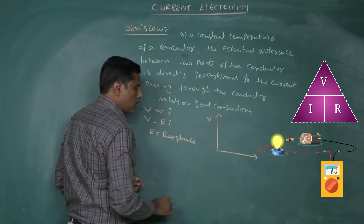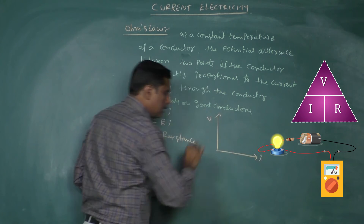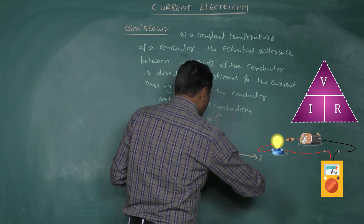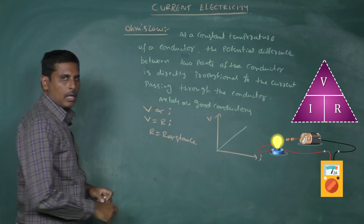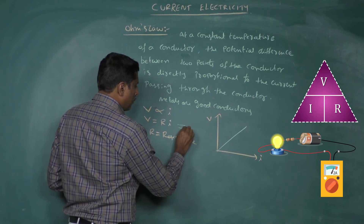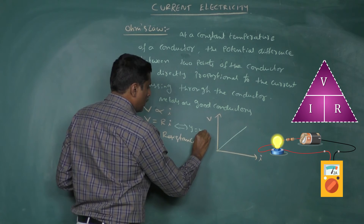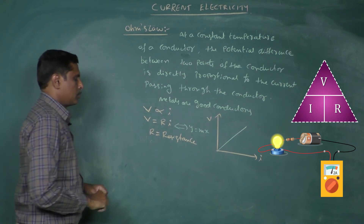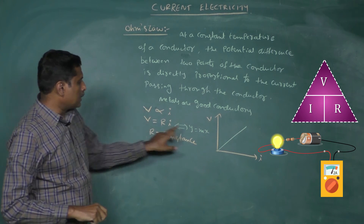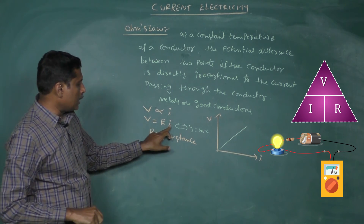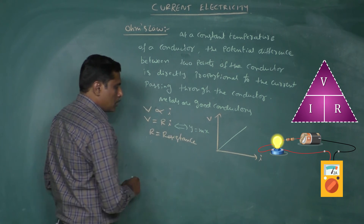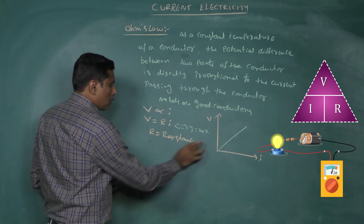If you draw a graph of voltage V versus current I, you get a straight line passing through the origin. Since V equals R times I, it is in the form of Y equals M times X, which gives a straight line. V is taken on the Y-axis and current I is taken on the X-axis.